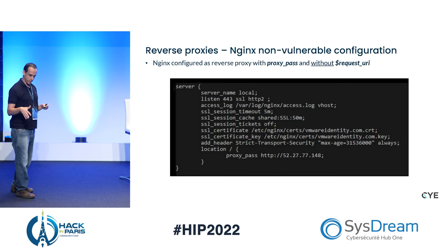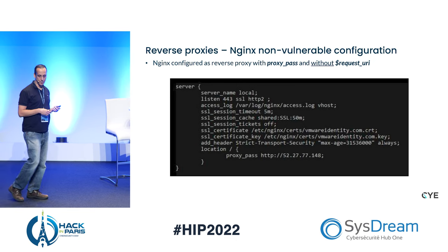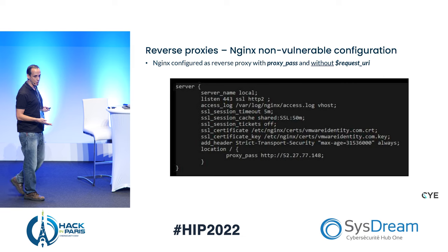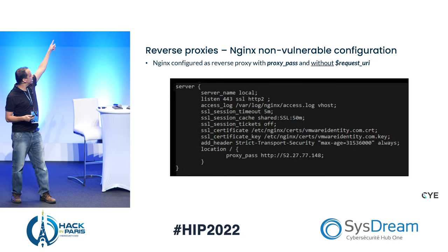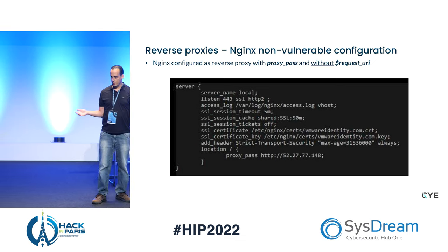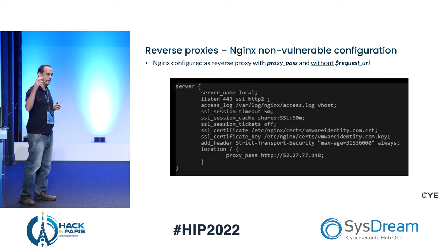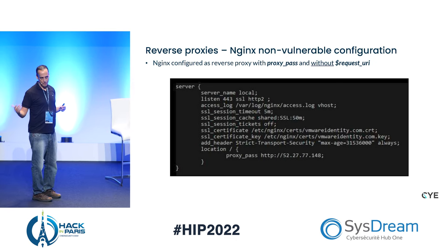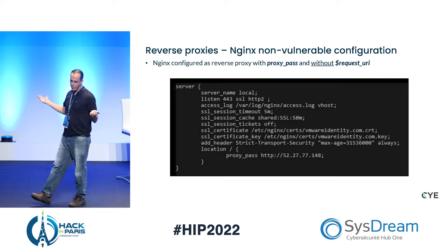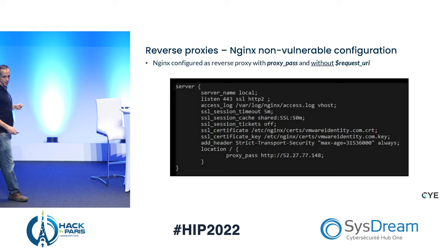We also found some non-vulnerable configurations. The vulnerable Nginx configuration uses the $request_uri variable. You can see the last line — proxy_pass — this is how you configure Nginx as a reverse proxy. The $request_uri variable is redundant — you don't have to use it. If you remove it, Nginx automatically appends the query of the original request to the backend server. But for some reason, when you include $request_uri, it also reverses the order of the response — very weird behavior.